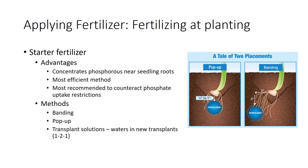Fertilizing at planting concentrates phosphorus near seedling roots. When the plant has a limited ability to forage for phosphorus, it is on the whole the most efficient way to apply phosphorus. It is most recommended when certain soil conditions restrict phosphate uptake, including cold, wet, or compacted soil; acid or alkaline soil; low phosphate soil; and in conservation tillage.